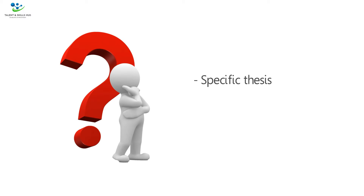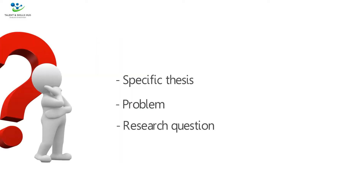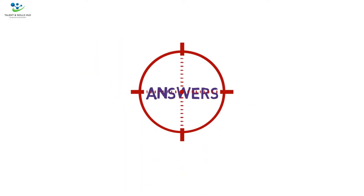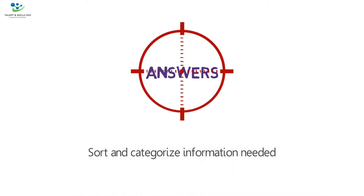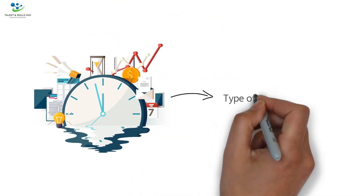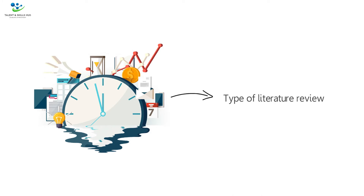Step one: planning. As part of planning, you will consider the focus area for the review. You will answer the question: what is the specific thesis, problem, or research question that my literature review will help to define? The answers will enable you to establish a focus that will allow you to sort and categorize information needed and eliminate irrelevant ones.